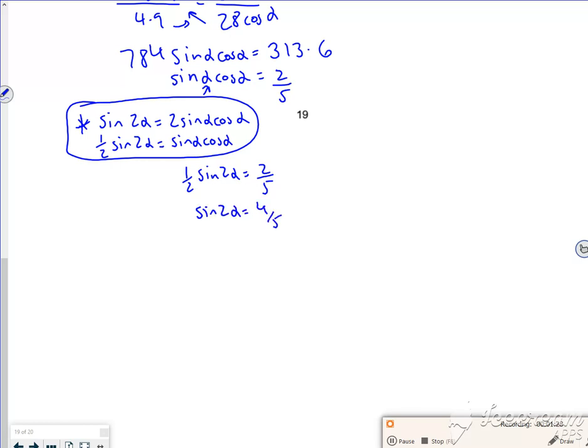So 2 alpha, the first two values for that will be 53.13 and 126.87, just doing inverse sine and then doing 180 minus. So alpha will be 26.6 degrees or 63.4 degrees.